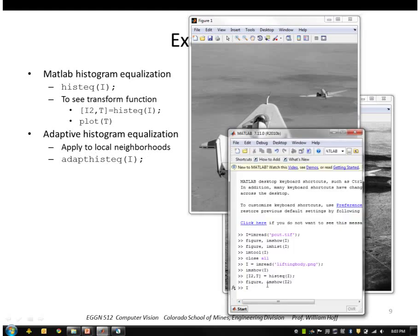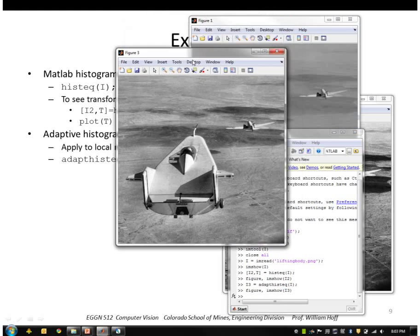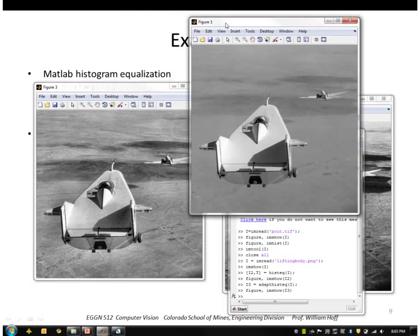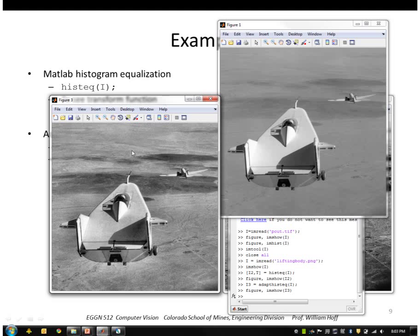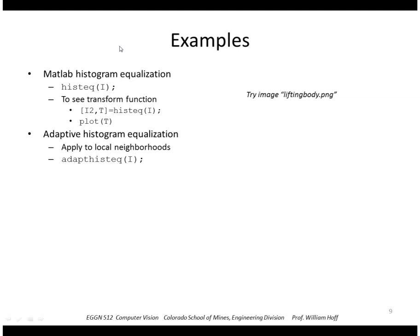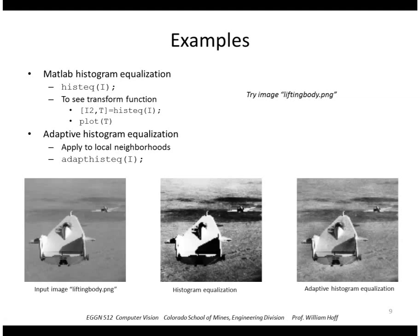This gives us a much better result. Here's the input and here's the output — we've improved the contrast in the background, but we still have good contrast on the airplane itself. So histogram equalization is an example of an enhancement technique. It doesn't add any information, but it does improve the visibility for our own visualization.